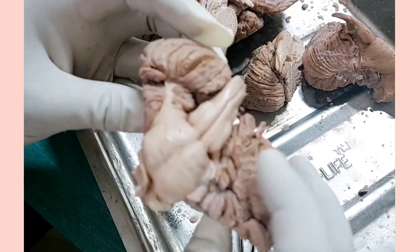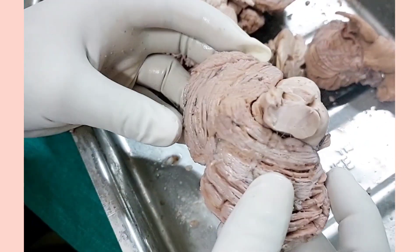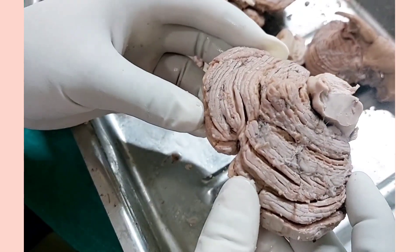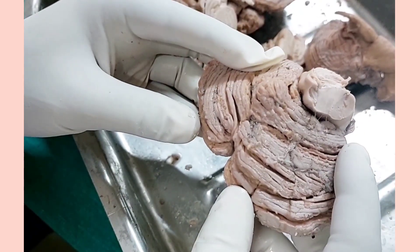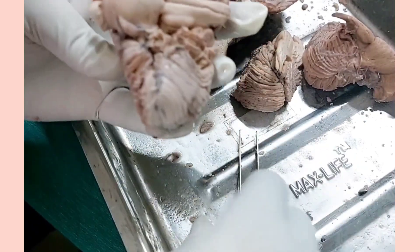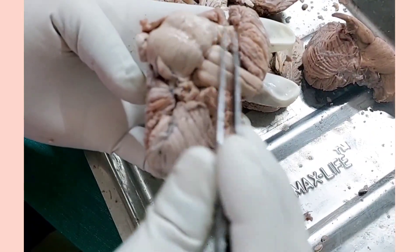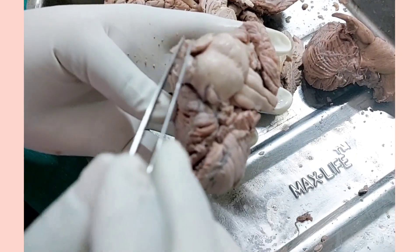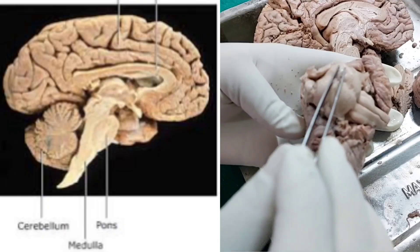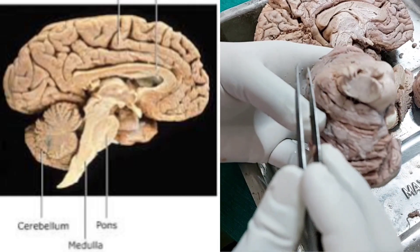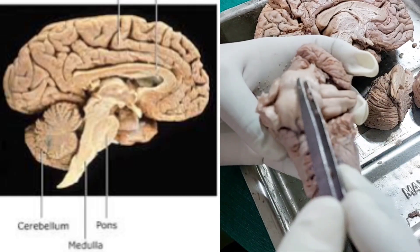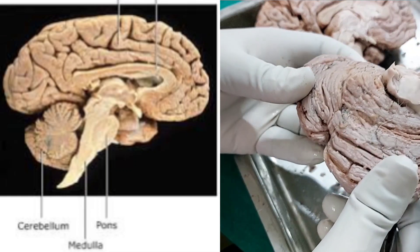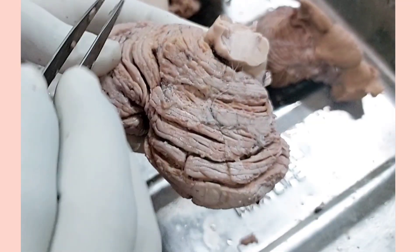When you are asked to hold the cerebellum in anatomical position, what points should you keep in mind? This is the brainstem — the pons, medulla, and above it the midbrain. Behind the pons and medulla is the cerebellum. All parts of the brainstem will be in front, and the posterior part is the cerebellum.